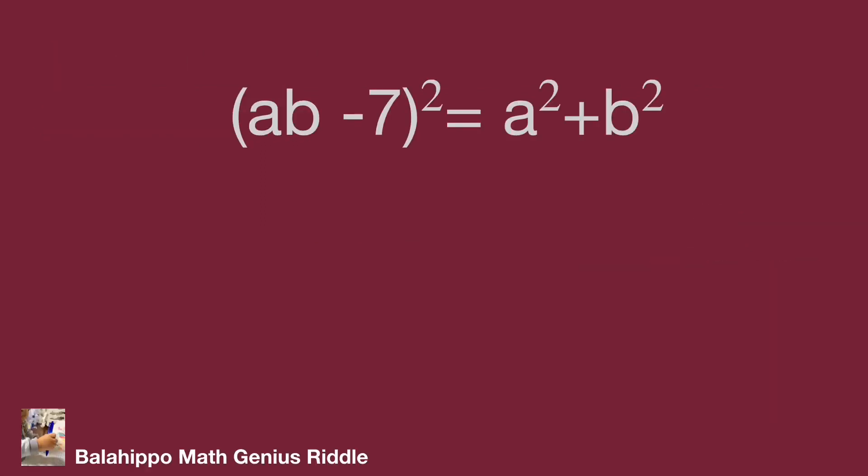The question: (ab - 7)² = a² + b². A, B are integers. In the given equation, we may generate more information to get the answer.